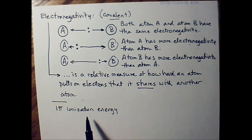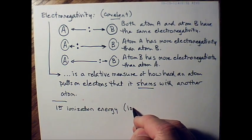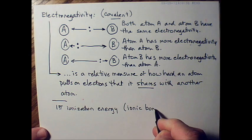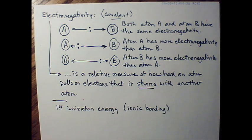Well, that's what first ionization energy is referring to. Ionization energy refers to removing electrons. So it's something we talk about when we talk about ionic bonding.